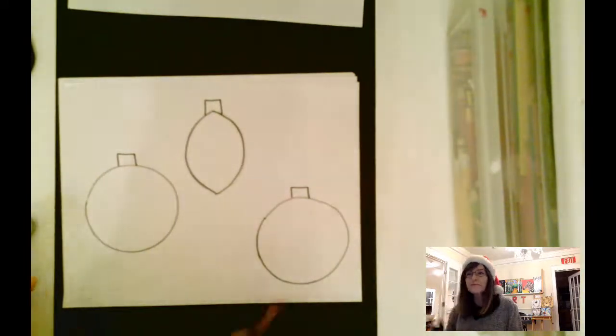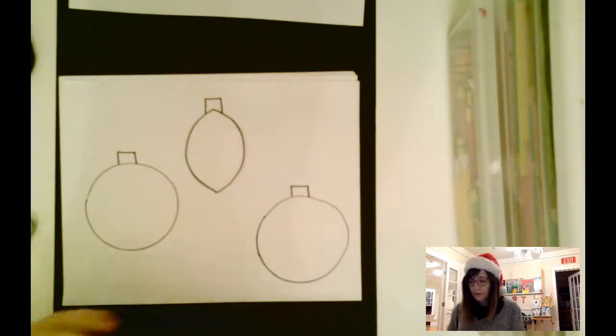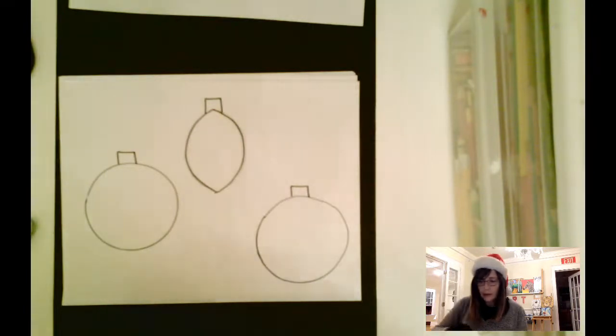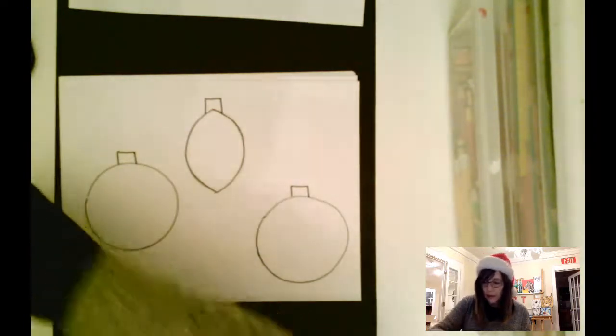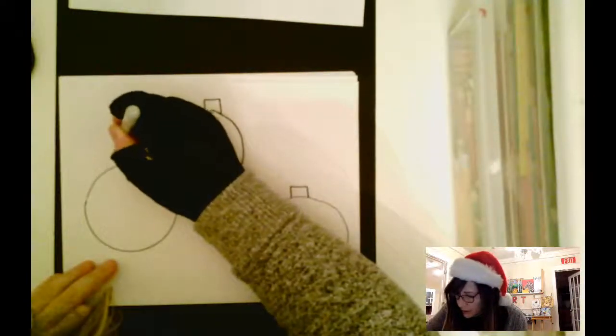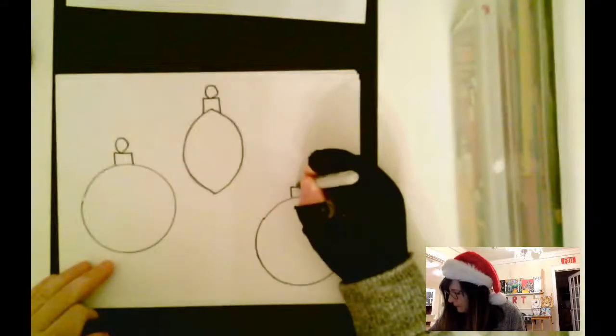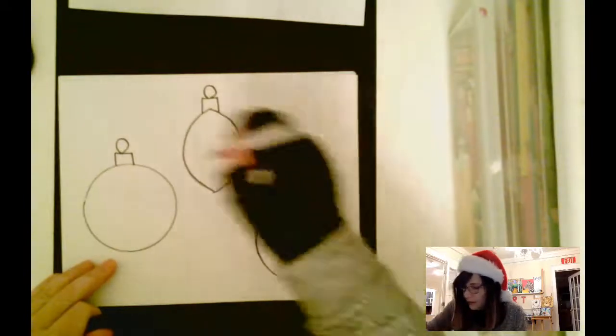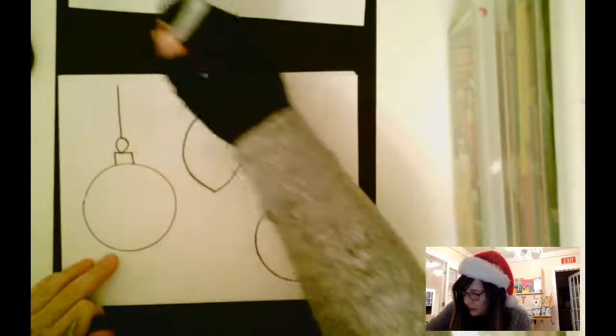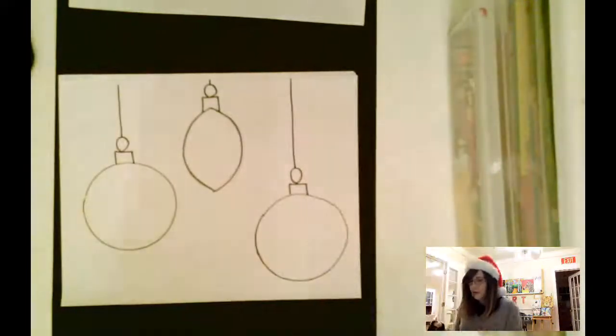Now the next thing you want to think about is these have to be hanging from something, don't they? So we've got to draw a string next, and usually there's a little hook. We're going to make a circle, a little circle or oval—I'm going to go with an oval this time—and then you need a string that goes up from that because they are all hanging from a string.